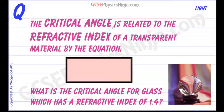The critical angle is related to the refractive index of a transparent material by the equation N for the refractive index equals 1 over the sine of the critical angle. So, what is the critical angle for glass which has a refractive index of 1.4? We're going to need to do a little bit of maths just to work out the critical angle C. Let's do that.